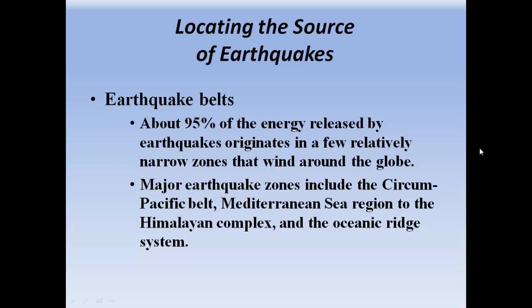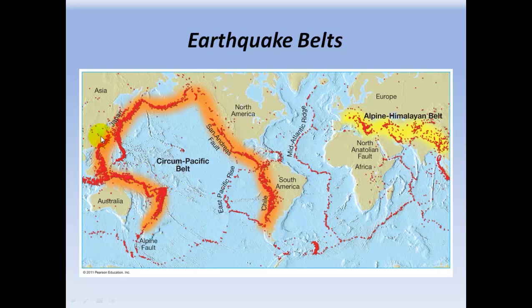Earthquake belts. Around 95% of the energy released by earthquakes originates in a few relatively narrow zones that wind around the globe. Major earthquake zones include the Circum-Pacific Belt — known as the Ring of Fire — the Mediterranean Sea region to the Himalayan complex, and the Oceanic Ridge System. Here's our Circum-Pacific Belt, the Ring of Fire, where besides most of our earthquakes, most of our volcanoes also occur. We also have a lot of activity along the Ocean Ridge System and along the Mediterranean-Himalayan Belt.